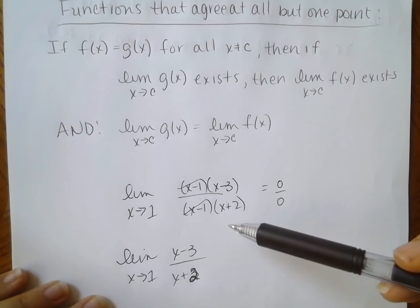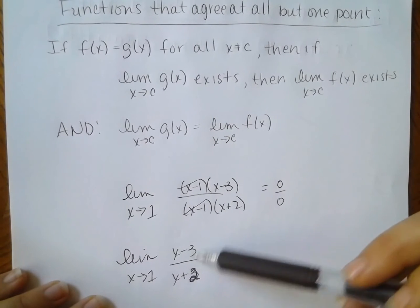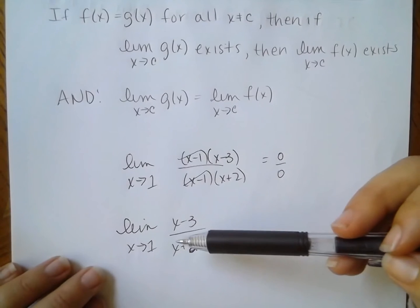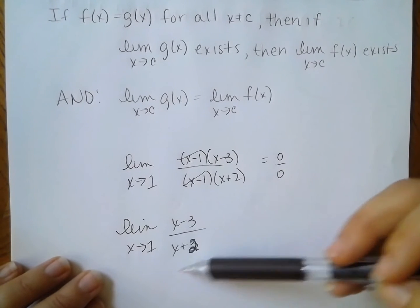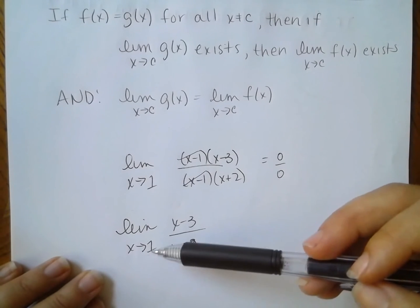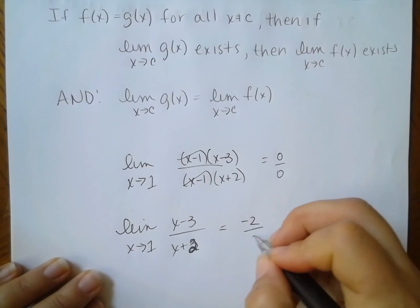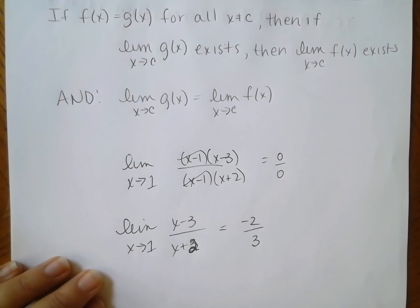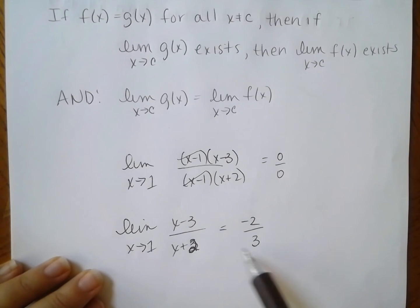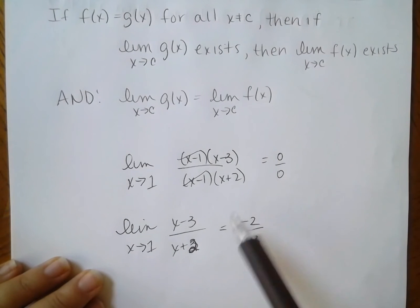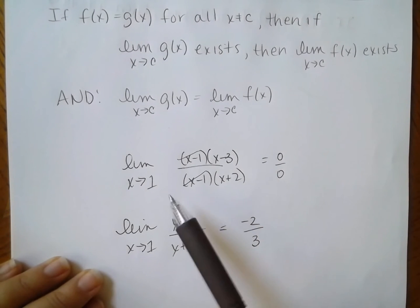Since these two functions agree everywhere except at x equals 1, if this simplified limit exists, then the original limit also exists and equals the same value. The simplified function is continuous, so I can use direct substitution: plug in 1 and I get negative 2 on top and 3 on the bottom, so that's my limit — negative two-thirds. Since this limit equals this, the original limit up here also equals that.